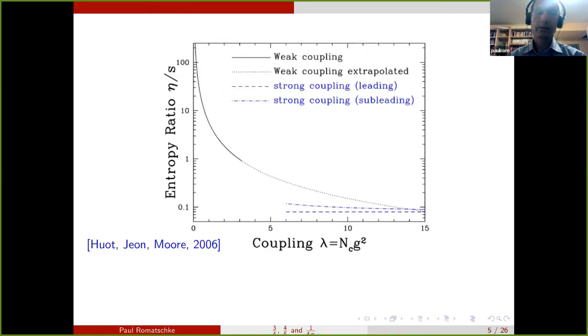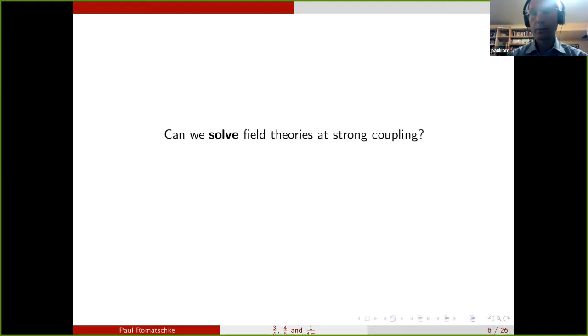The same is true for other objects that we are interested in, in particular transport properties. So there's a key transport property that is of interest for many applications, such as heavy ion collisions. That is the ratio of shear viscosity over entropy density, η/s. And it can also be calculated for N=4 Super Yang-Mills in the weak coupling limit and the strong coupling limit. In particular, one finds that in the strong coupling limit, this ratio η/s goes to a universal constant, namely 1/4π.